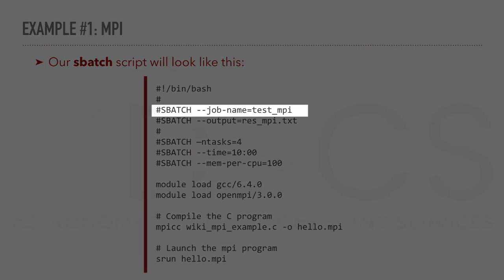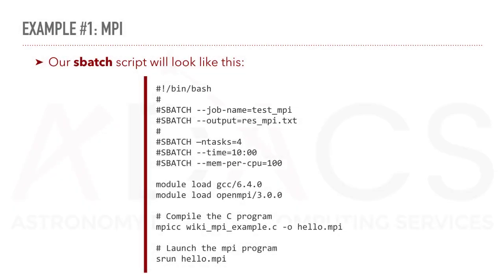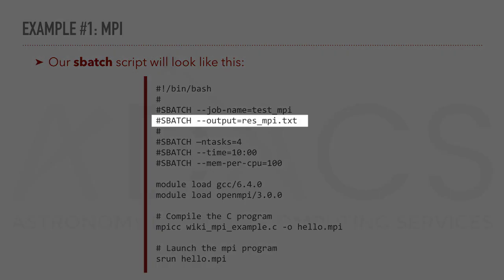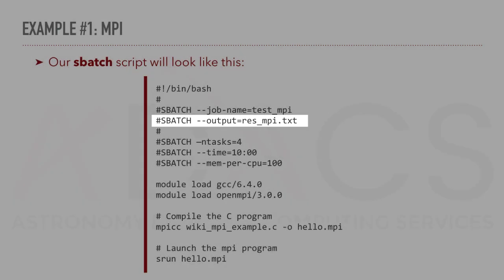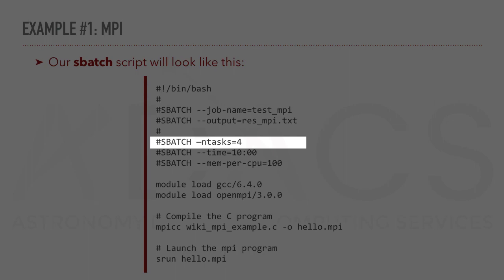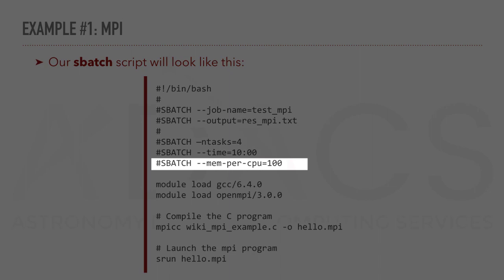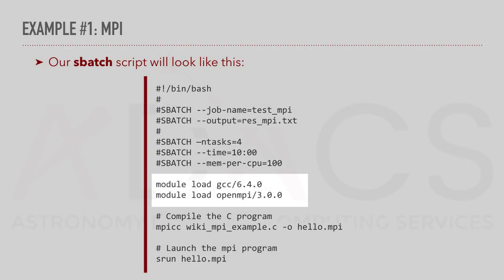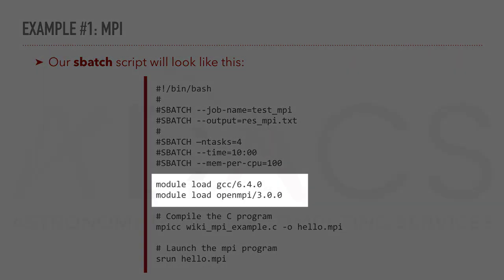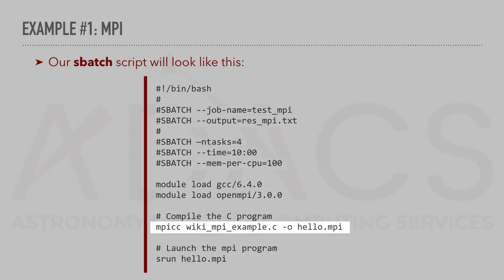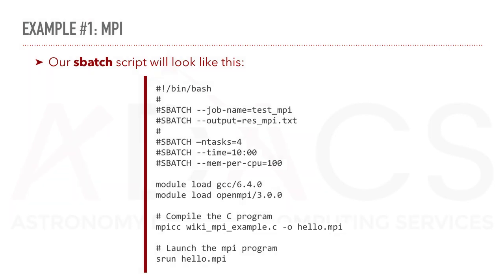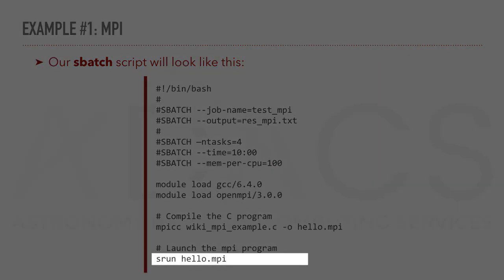We will call the job testmpi. We will output the standard output and error into a file called resmpi.txt. We'll request 4 CPUs, possibly on 4 different machines, for 10 minutes, using 100MB per CPU. For the program to run, we actually need to load a few modules — GCC and OpenMPI in this case. Then we compile the C program and launch its output program.